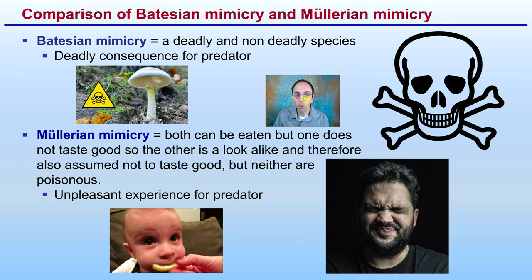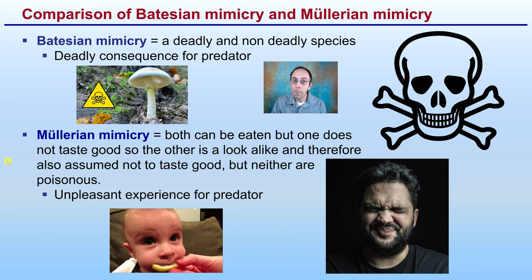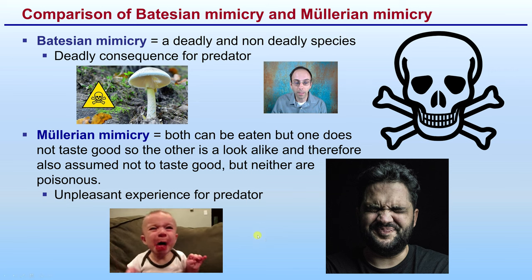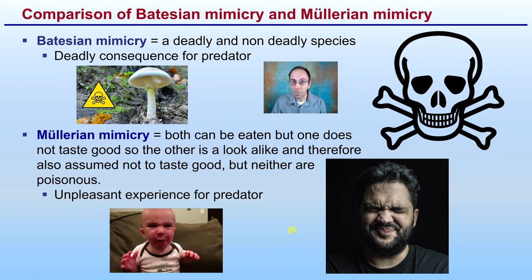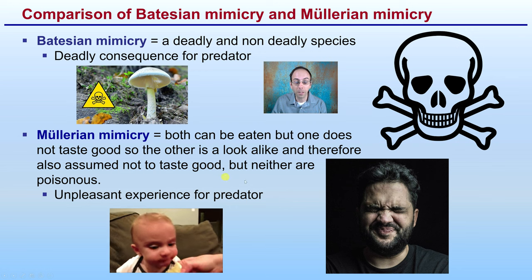A quick comparison between these two forms of mimicry: Batesian mimicry involves a deadly and a non-deadly species, with deadly consequences for the predator if they make the wrong selection. In contrast, with Müllerian mimicry, both can be eaten, but one does not taste as good as the other and is a lookalike, therefore also assumed not to taste good. Neither are poisonous — it's simply an unpleasant experience for the predator, like something bitter or sour, whereas Batesian mimicry carries a deadly consequence.